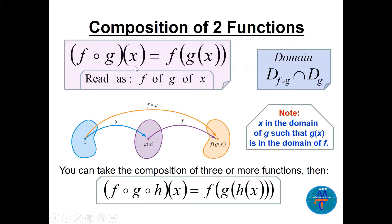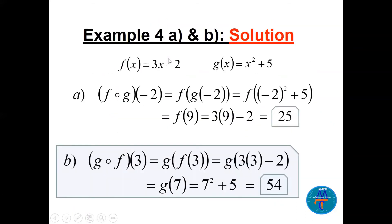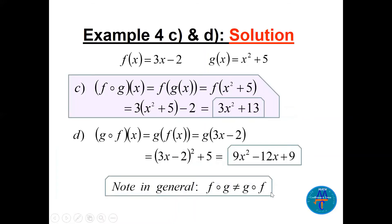Parts c and d in general: for (f∘g)(x), replace g(x) = x² + 5 inside f: f(x² + 5) = 3(x² + 5) − 2 = 3x² + 13. For (g∘f)(x), start with f, replace it inside g. The idea here is to compare f∘g and g∘f — they are not the same in general.